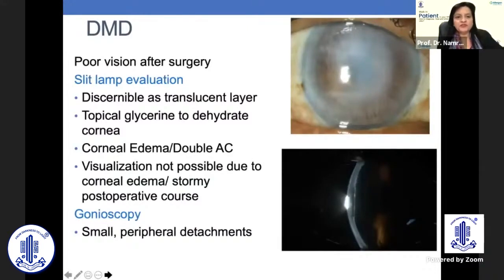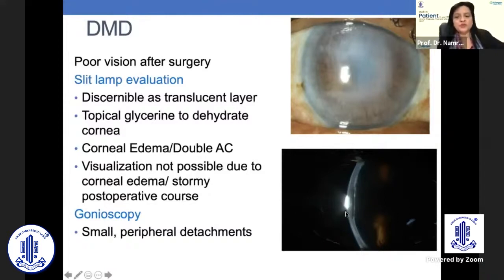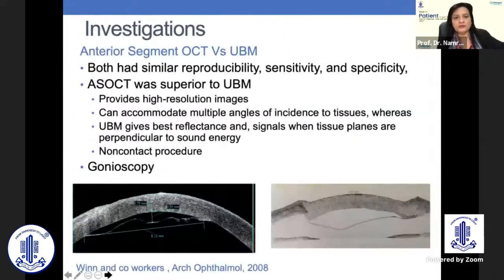The patient will complain of poor vision after surgery, and slit lamp will show a discernible translucent layer. You may have to put topical glycerin to dehydrate the cornea. There can be corneal edema and double anterior chamber, and at times visualization may not be possible due to a very stormy postoperative course. Gonioscopically, small peripheral attachments can be seen, but this may be difficult because of corneal edema.